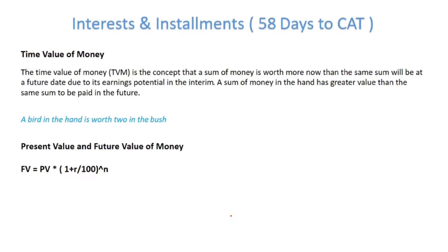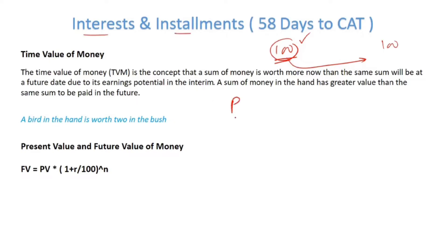The concept behind interests and installments is the time value of money. What is time value of money? 100 rupees today and 100 rupees tomorrow — which is more valuable? 100 rupees today is more valuable, because this amount has the capacity of earning, has the capacity of generating potential returns.